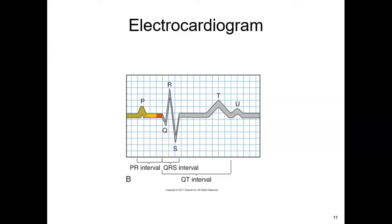The P-wave represents the firing of the SA node and the depolarization of the atria. The QRS complex is the depolarization of the AV node throughout the ventricles — the actual contraction of the ventricles. The T-wave is repolarization of the ventricles, and the U-wave, if we see it, is the Purkinje fibers repolarizing. If we do see the U-wave, sometimes it's because we have hypokalemia. The intervals between certain components have clinical significance for us.